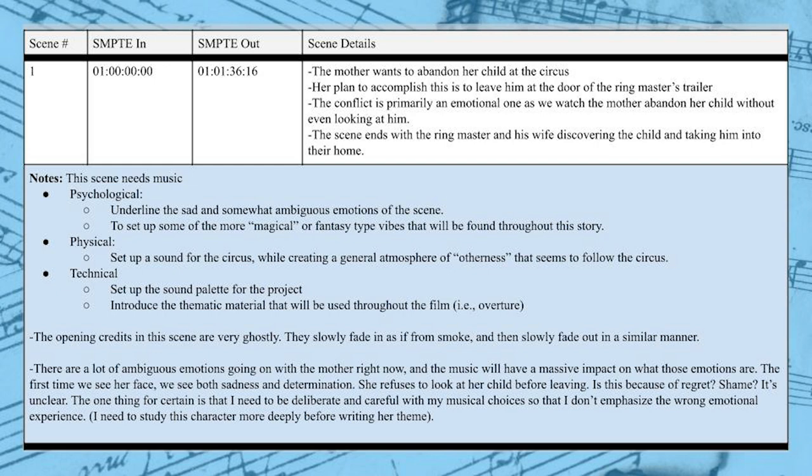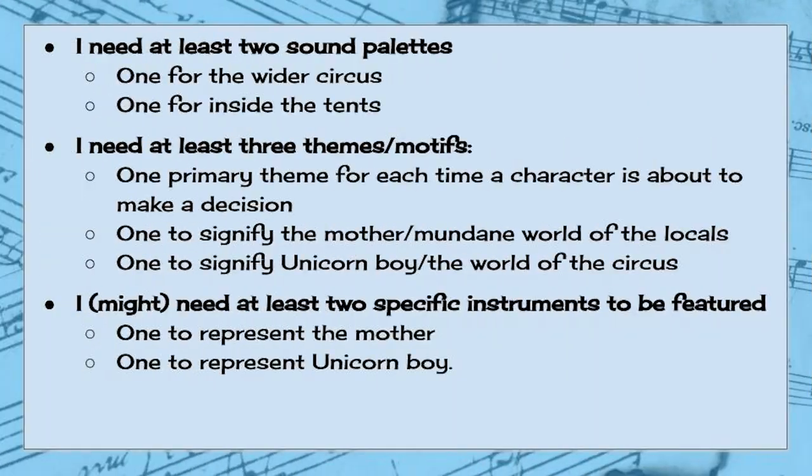We'll discuss my strategy for this in the next video. Once you have finished taking notes on every single scene, it's time to use these notes to create a rough draft list of every theme, motif, and sound palette that you think you're going to need for this film. For me, I realized I'll need at least two different sound palettes, three different themes or motifs, and possibly even a few specific instruments earmarked to help portray specific characters. Figuring out these specific patterns was only possible because of the time I took to carefully study the story and pay attention to its structure.